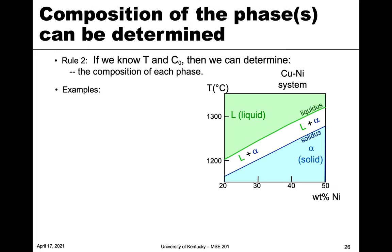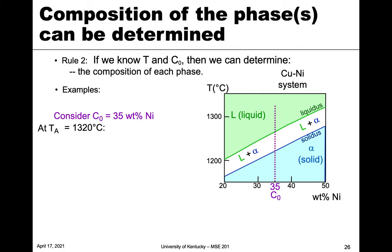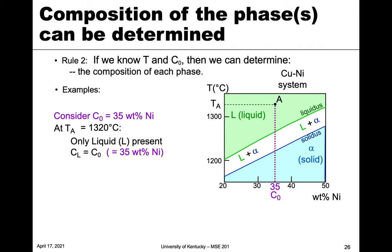Let's look at a zoomed-in version of this phase diagram, focused on a narrow composition and temperature range within the two-phase region. We'll consider 35 weight percent as our overall composition C-naught — which just means the overall alloy composition. Let's look at a series of temperatures to understand what happens at different points.